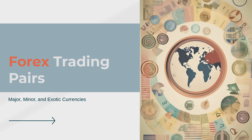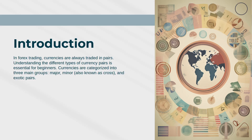Forex Trading Pairs: Major, Minor, and Exotic Currencies. In forex trading, currencies are always traded in pairs. Understanding the different types of currency pairs is essential for beginners. Currencies are categorized into three main groups: Major, Minor (also known as Cross), and Exotic Pairs.